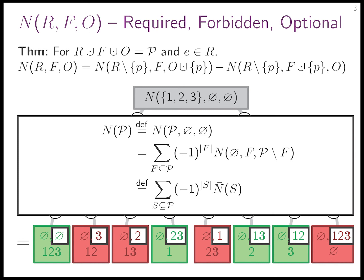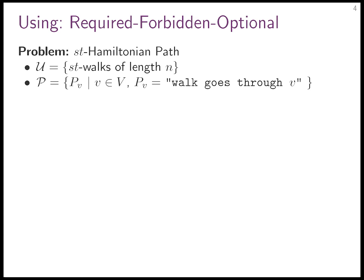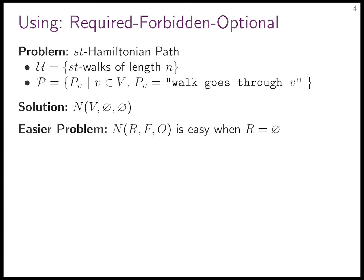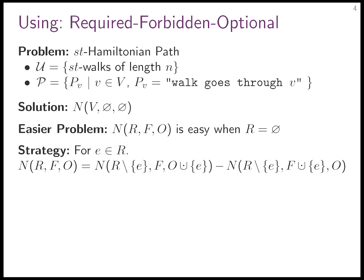Now we have a unified framework to look at both, and we could even make an algorithm that does inclusion-exclusion and normal branching interleaved. To recap: that's how we solved the S-T Hamiltonian path problem. We have the universe, the properties, the actual solution is N(V, ∅, ∅). The easier problem is N(R, F, O) when R is actually empty — when there are vertices we're not allowed to go to and vertices we don't care about but no vertices we have to go to. This is achieved using the 'required equals optional minus forbidden' branch, moving elements out of R. It looks like branching but is based on inclusion-exclusion — it's called an inclusion-exclusion branch.